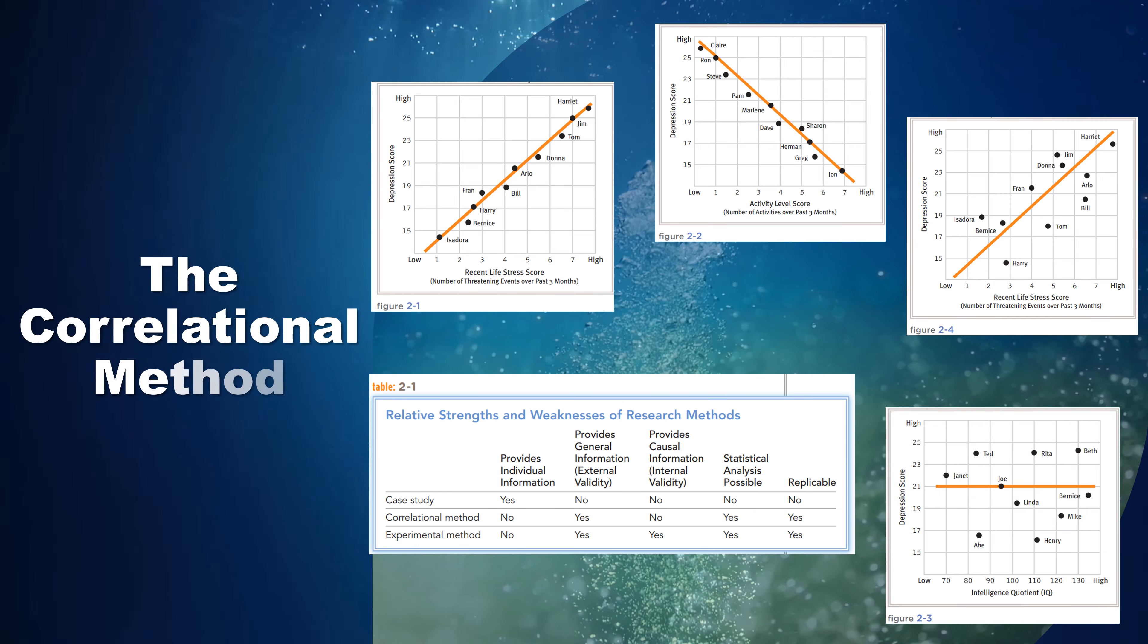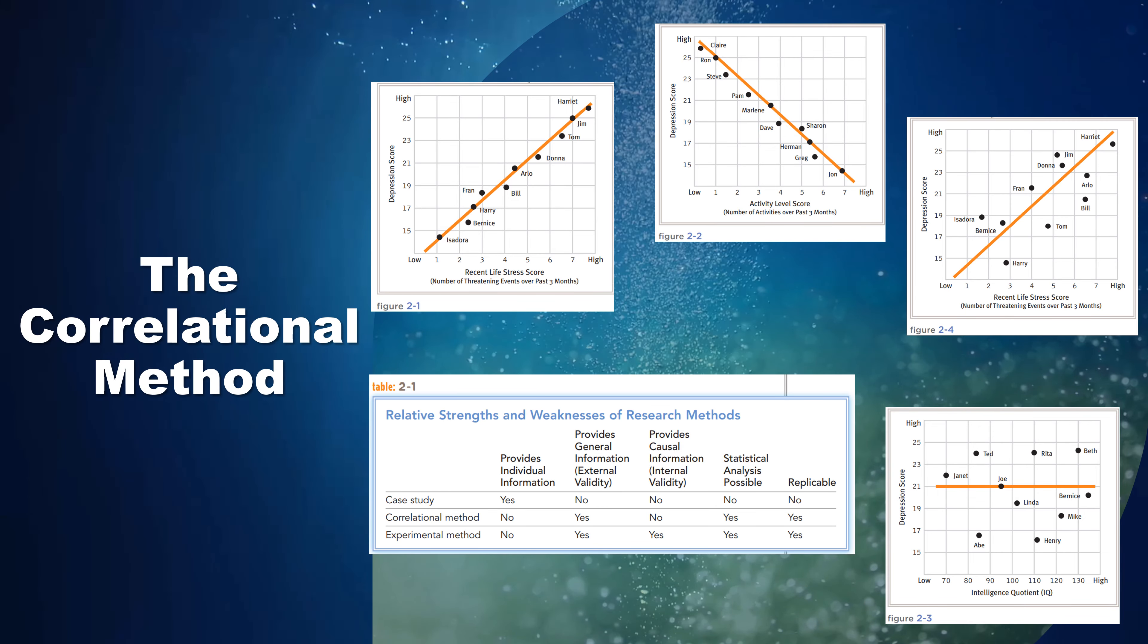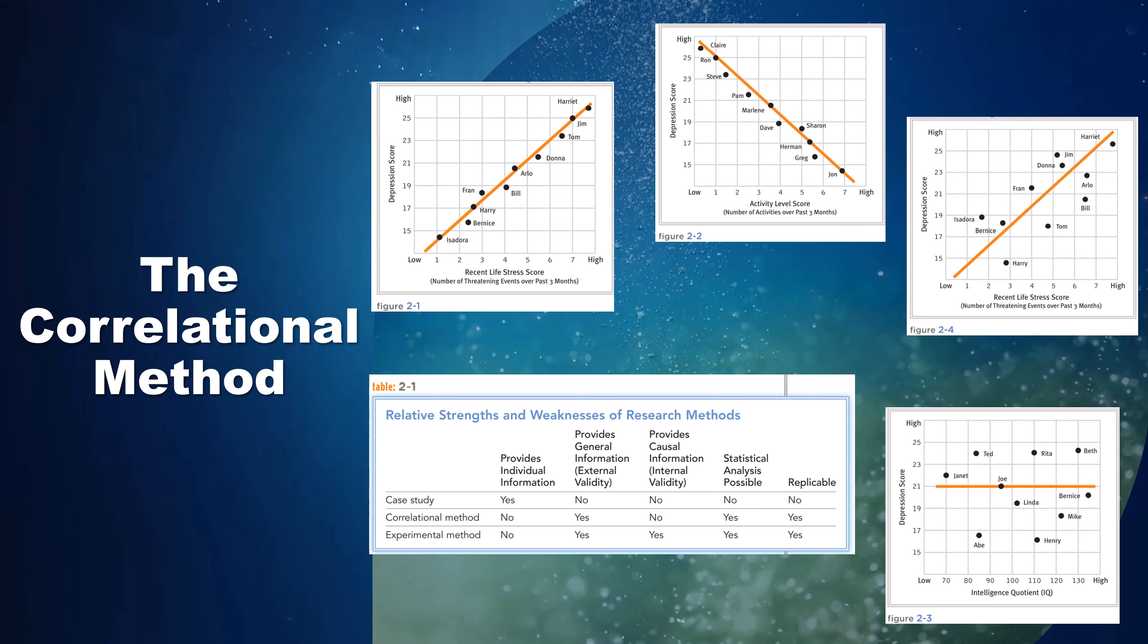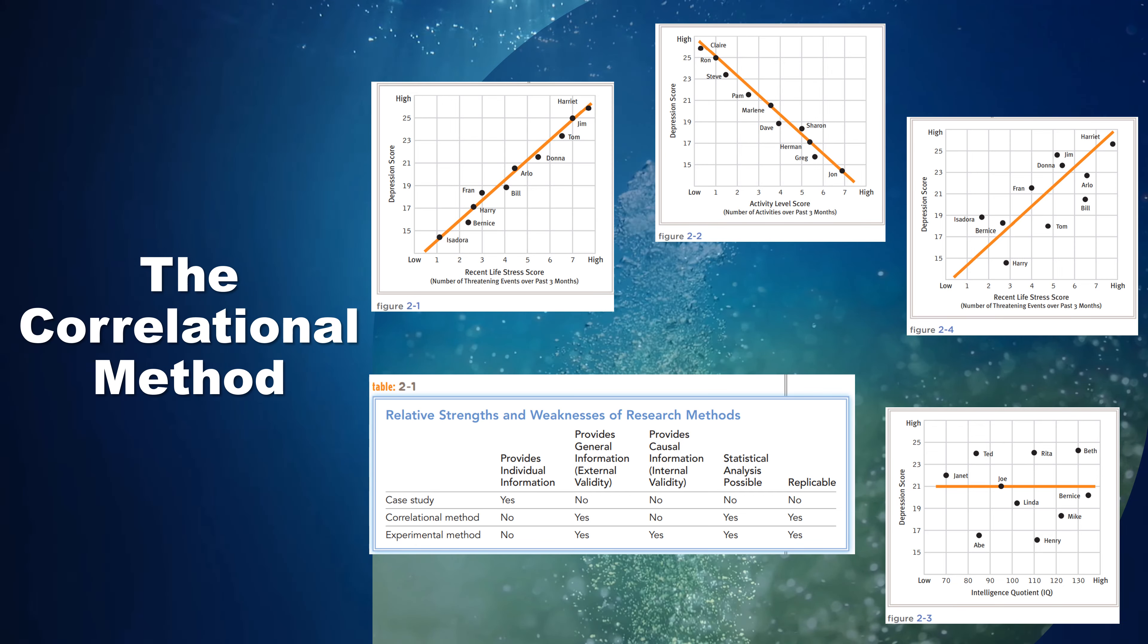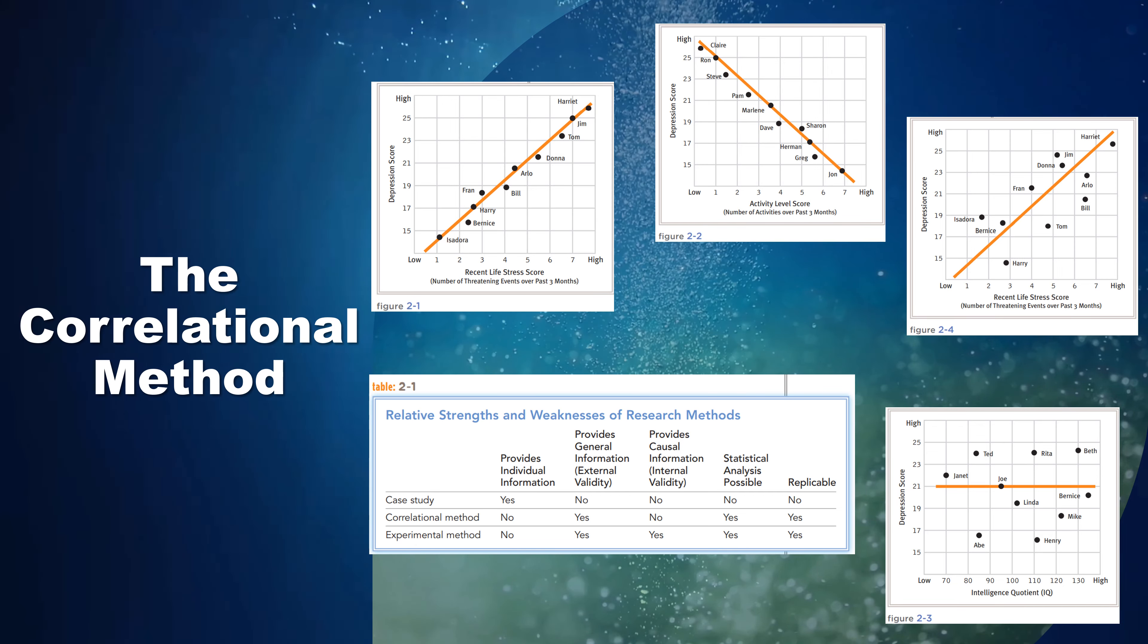The correlational method. Correlation is the degree to which events or characteristics vary with each other. The correlational method is a research procedure used to determine this relationship between variables.